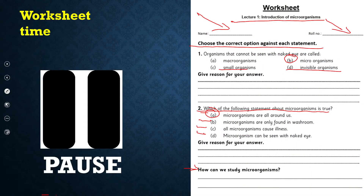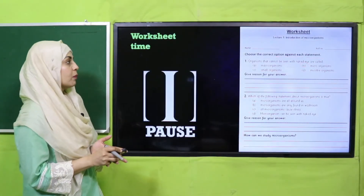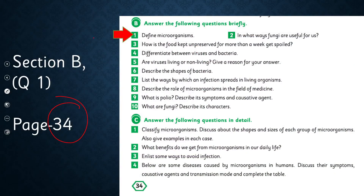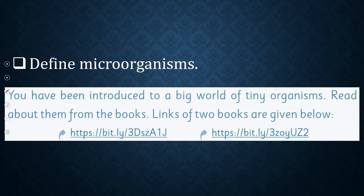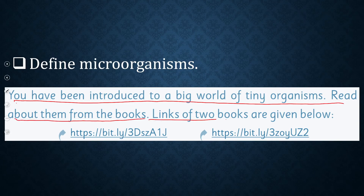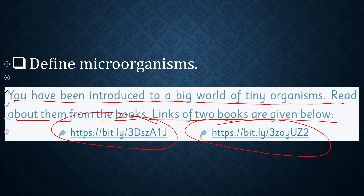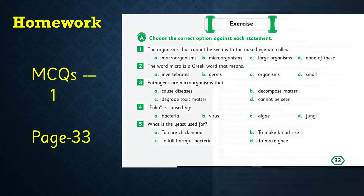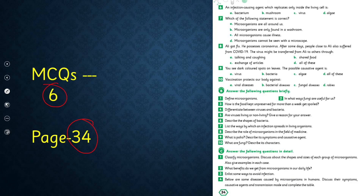I hope everybody has finished the worksheet and submitted it to your teacher. For homework, you will complete Section B, Question Number One on page number 34 — define microorganisms — in your notebooks. For additional help, links to two books about microorganisms are given below. You will also do MCQ Number One on page number 33 and MCQ Number Six on page number 34. So your homework is: Exercise B Question One, and MCQ numbers one and six.